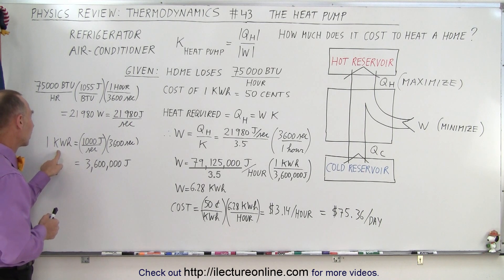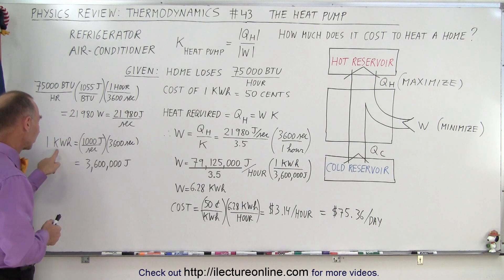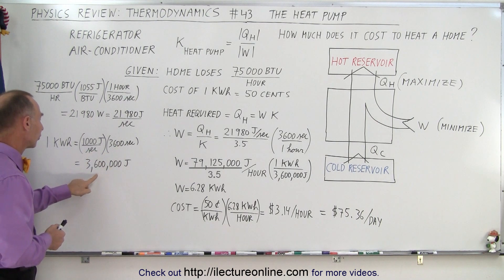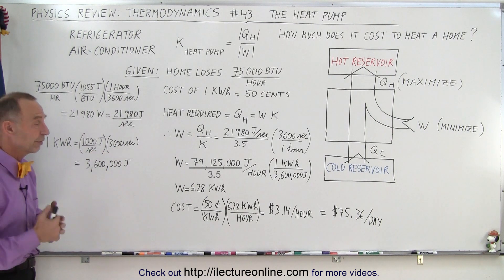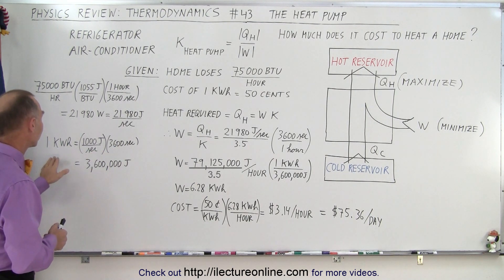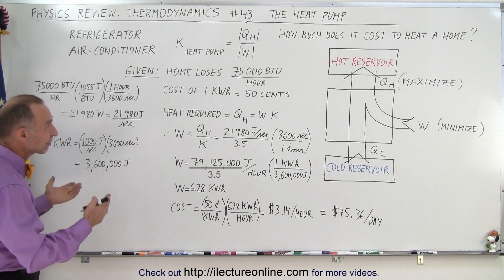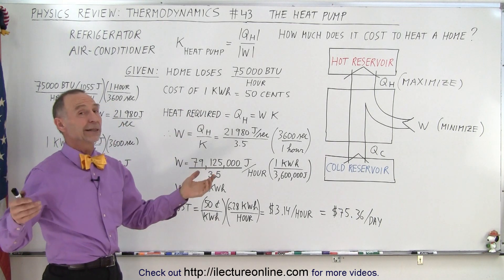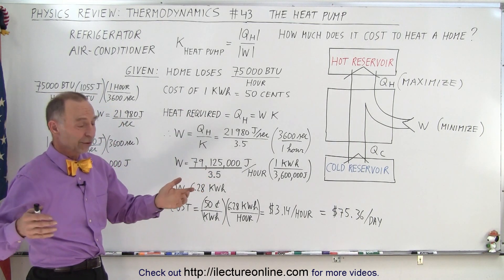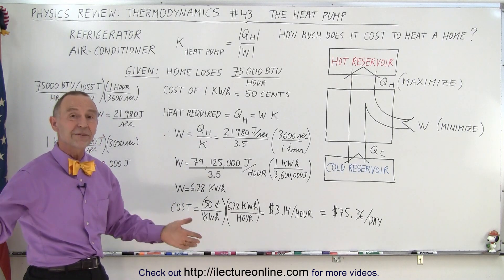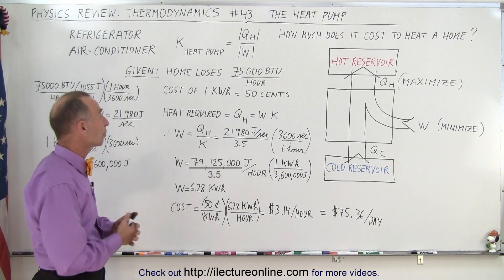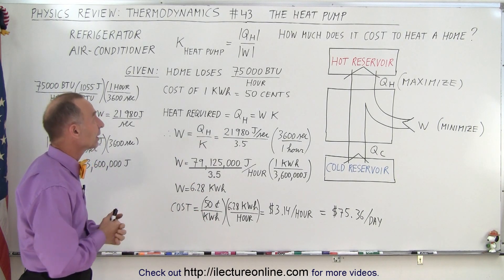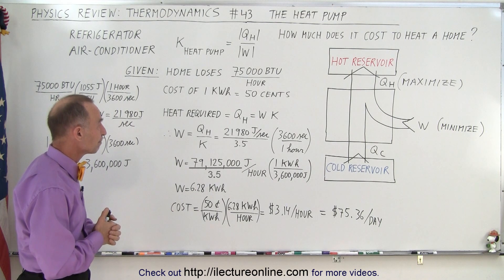Also keep in mind that a kilowatt hour is 1,000 joules per second times 3,600 seconds, for 3.6 million joules worth of energy. A kilowatt hour costs about 50 cents. The last time I looked at my electric bill, it was somewhere between 30 and 70 cents per kilowatt hour, depending upon what time of day that we use that electricity.